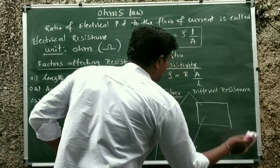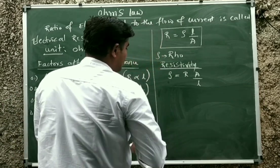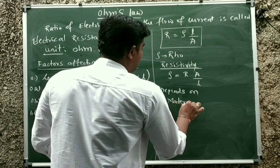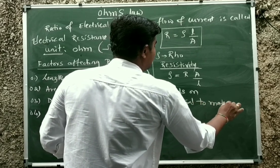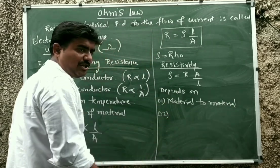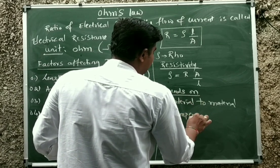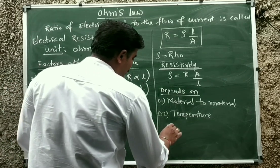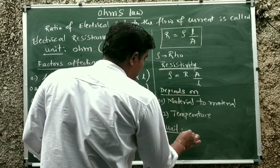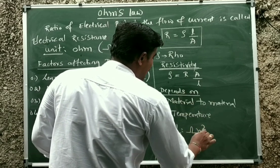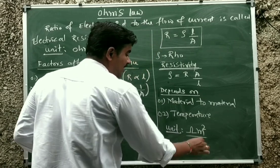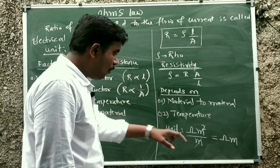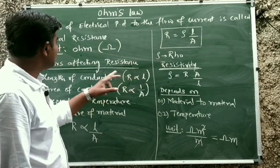Resistivity changes from material to material, irrespective of size and shape, and it also depends on temperature. Resistance changes from configuration to configuration. The unit of resistivity is: resistance unit is ohm, area unit is meter squared, divided by length in meters — one meter cancels, leaving ohm meter. So ohm meter is the unit of resistivity, and ohm is the unit of resistance.